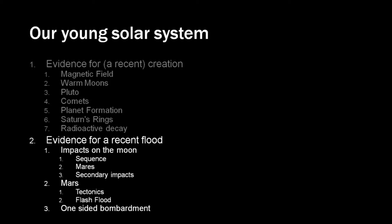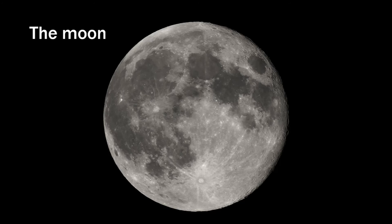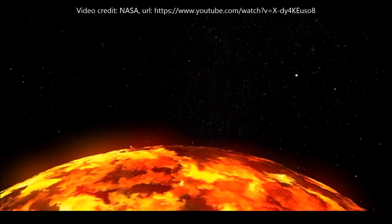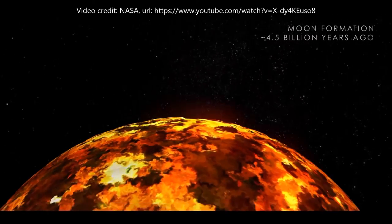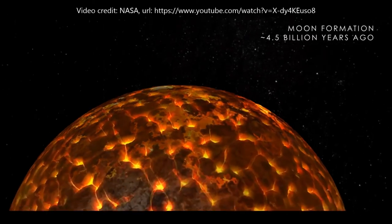Now it appears the solar system also shows evidence for a recent catastrophe. First let's look at impacts on the moon. Here is a video from NASA where they show the sequence of impacts on the moon according to what is generally accepted today.